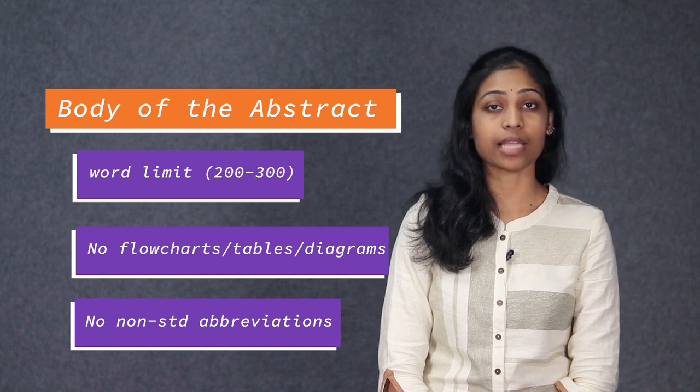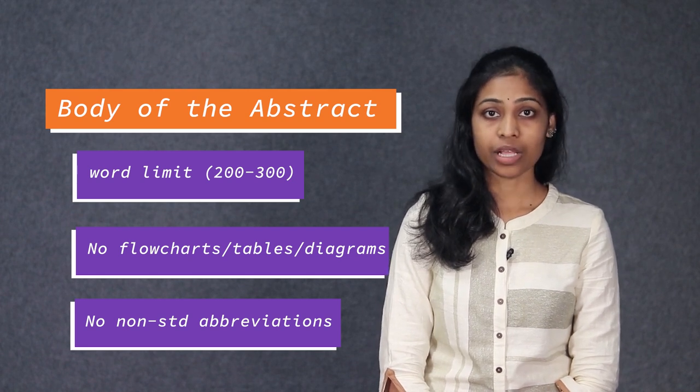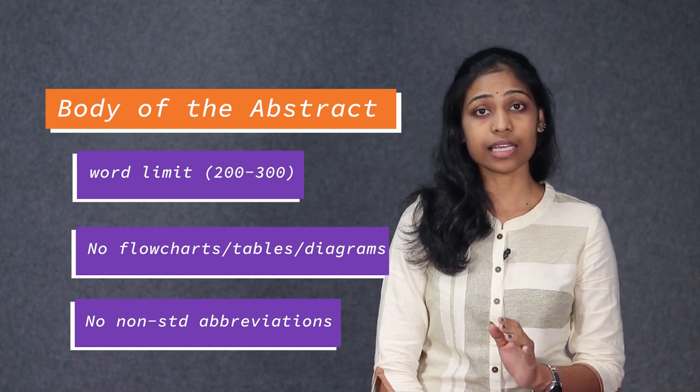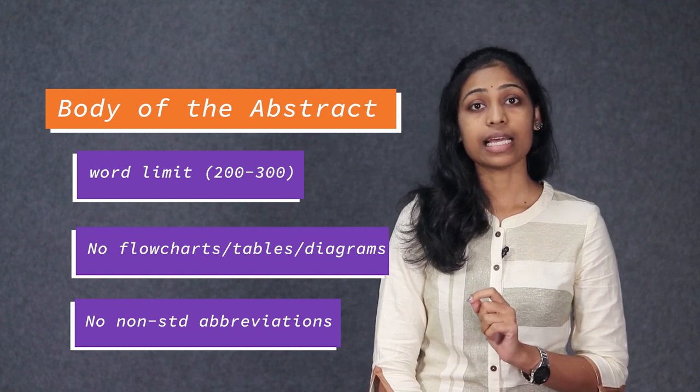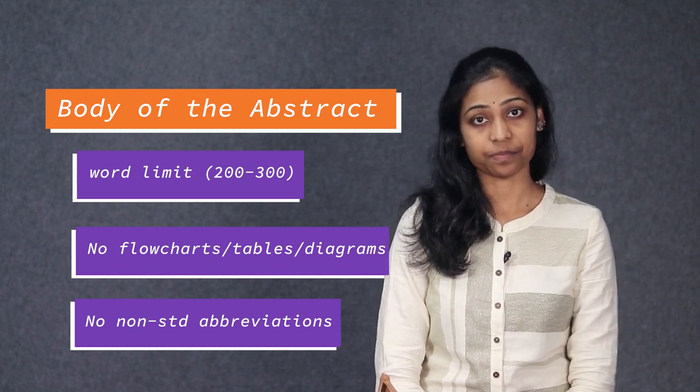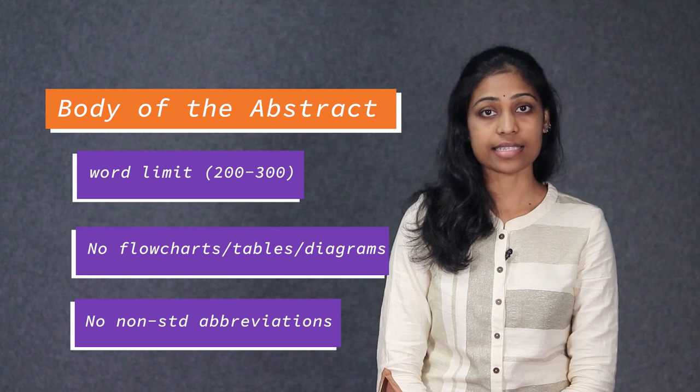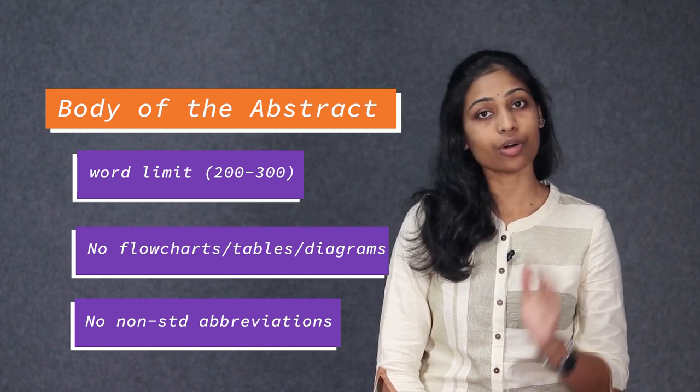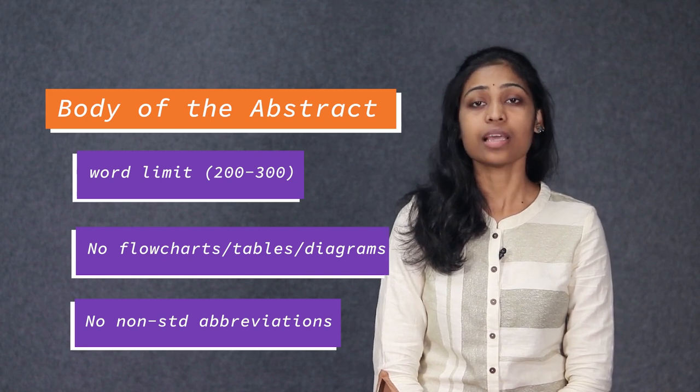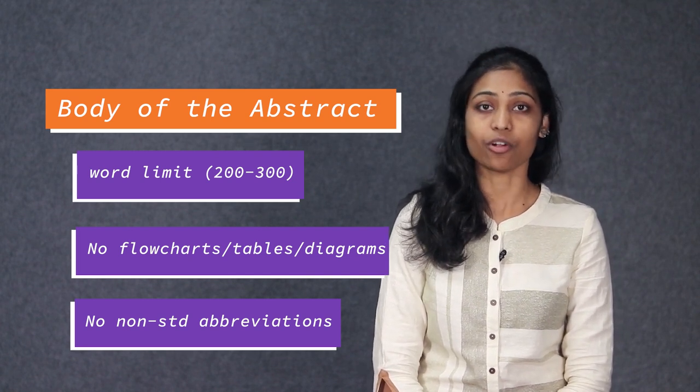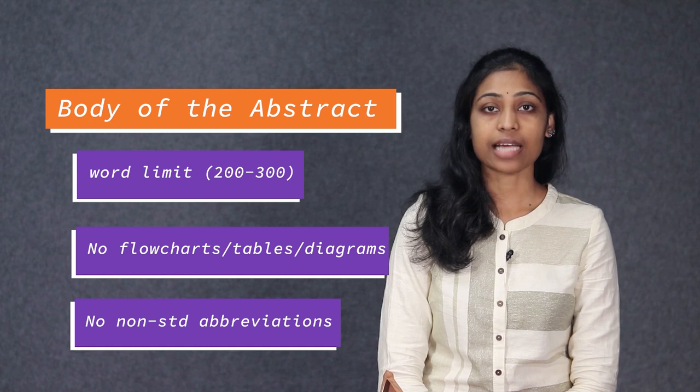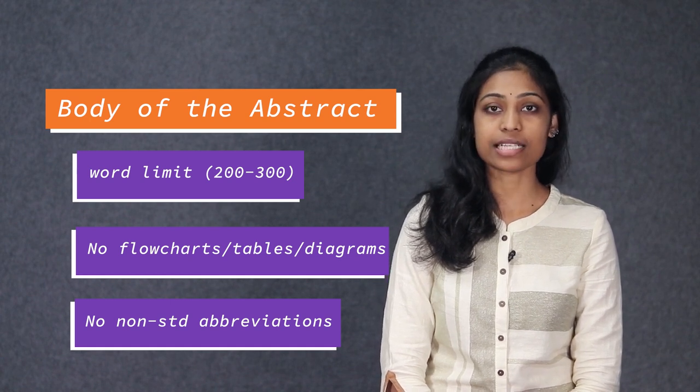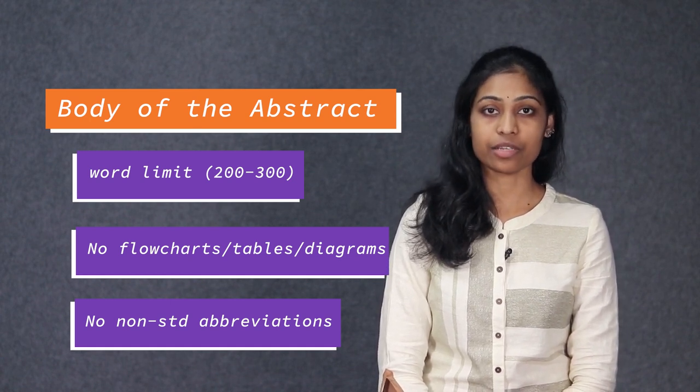Non-standard or uncommon abbreviations should be avoided. If it is really necessary they must be indicated in their first mention. Font style and size will be mentioned in the guidelines and should remain constant throughout the abstract. If the information is not provided on this, use the font Times New Roman with font size 12 and the line spacing of 1.